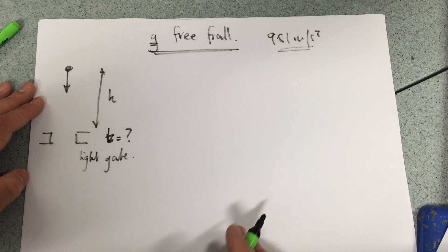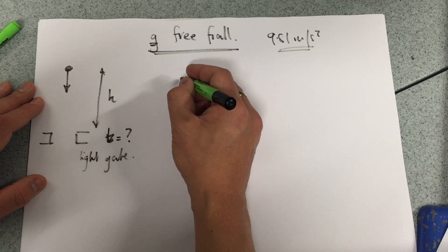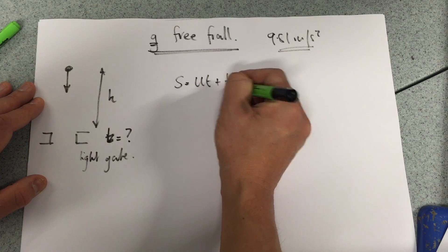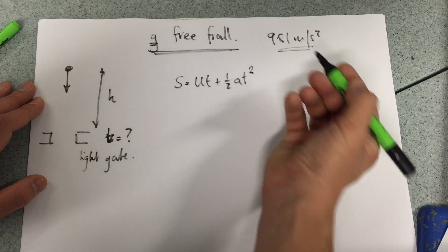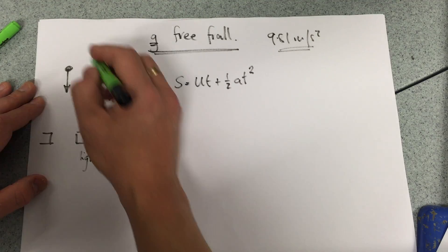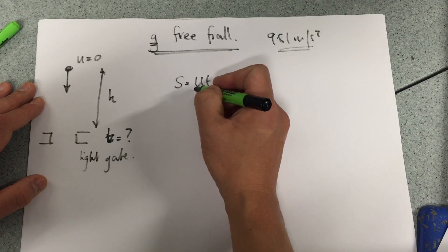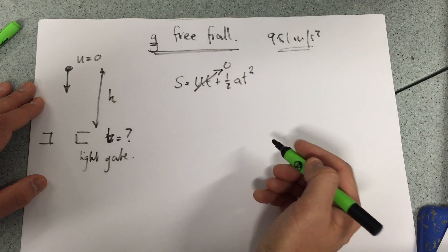And then we're going to use that information in one of the kinematic equations, this one: s equals ut plus a half a t squared. Of course, you know that the initial velocity is zero. It's going to be suspended stationary, so you can get rid of that aspect.